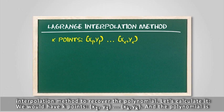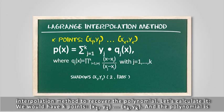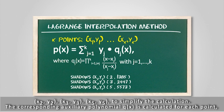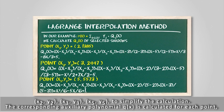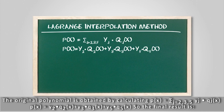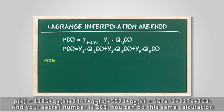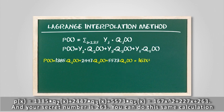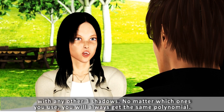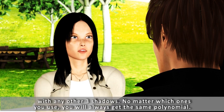Let's calculate it. We would have k points (x1, y1) ... (xk, yk), and the polynomial is determined by calculating p(x). In our example the 3 points are (x2, y2), (x3, y3), (x5, y5). The corresponding auxiliary polynomial q(x) is calculated for each point. The original polynomial is obtained by calculating p(x) with q(x), so the final result is p(x) = 1385*q2(x) + 2447*q3(x) + 5573*q5(x) = 167*x^2 + 227*x + 263. And your secret number is 263. You can do this same calculation with any other 3 shadows. No matter which ones you use, you will always get the same polynomial.